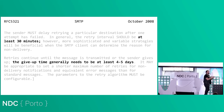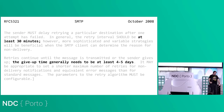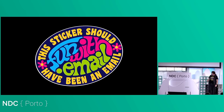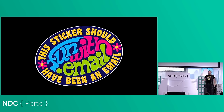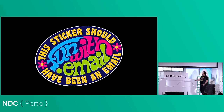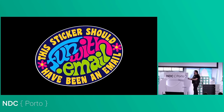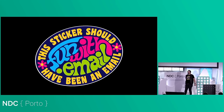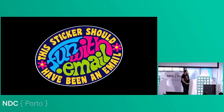The good news is all of you who did not get that email can come and get one of these at the end of the stage. This is the sticker that should have been an email. You've seen 'the meeting that could have been an email'? Well, now we have sticker equivalents of that. You can all come and grab one of those at the end.